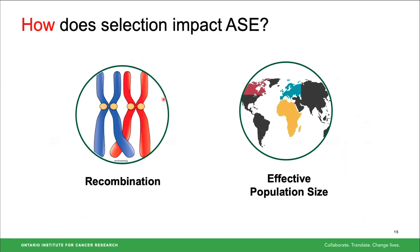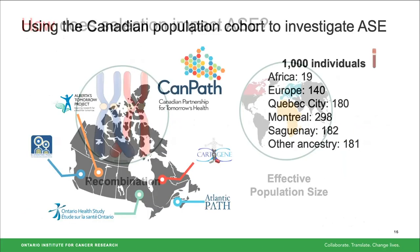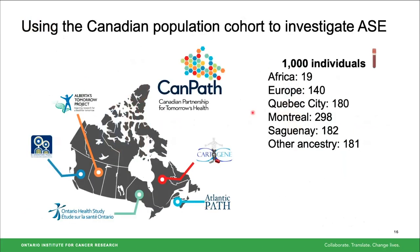The two aspects I'm presenting today are recombination and effective population size. The data I'm using is from a Canadian population cohort called CANPATH. We have a thousand individuals that have been genotyped and RNA-sequenced from whole blood, with ancestry from Africa, Europe, and three subpopulations: Quebec City, Montreal, and Saguenay.